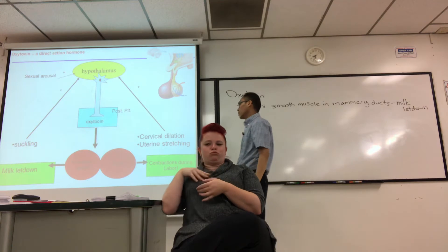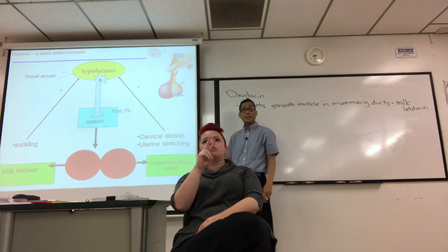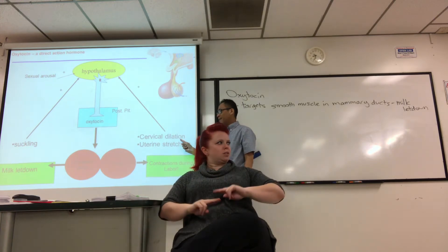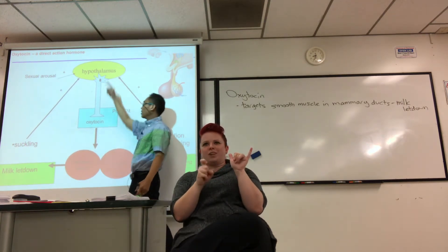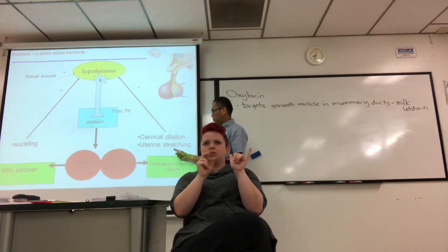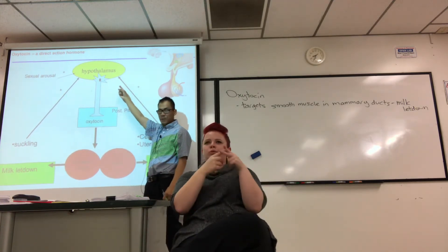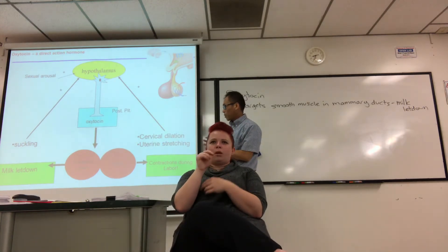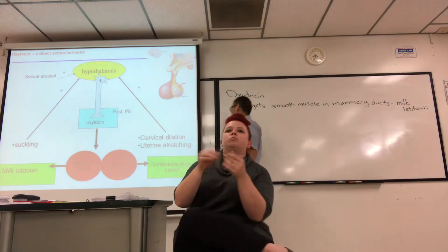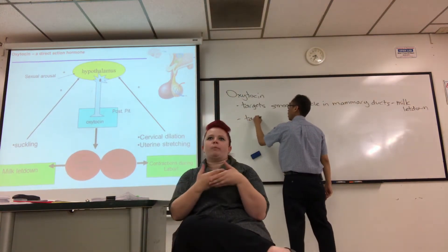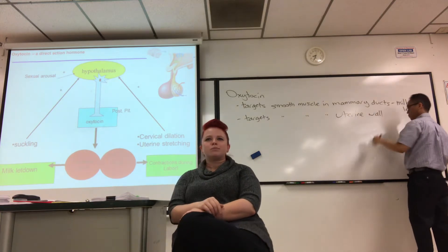Oxytocin can also help the cervix dilate. The cervix is the bottom part of the uterus. During labor and delivery, it needs to dilate about 10 centimeters to accommodate the baby's head. That dilation, along with uterine stretching as the baby stretches the wall, stimulates the release of oxytocin, which helps induce labor. It causes smooth muscle in the uterine wall to contract to help push the baby out.